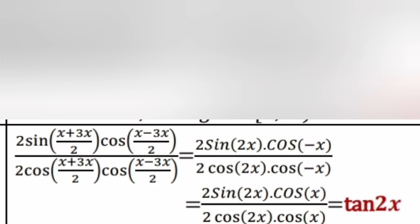Answer: Using sum-to-product formulas: 2 sin 2x cos(-x/2) / 2 cos 2x cos(-x/2) = 2 sin 2x cos(x/2) / 2 cos 2x cos(x/2) = sin 2x / cos 2x = tan 2x.